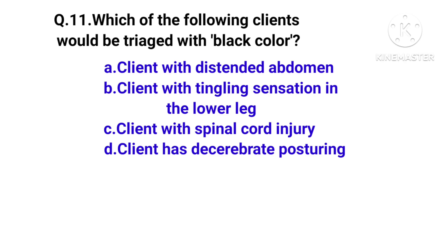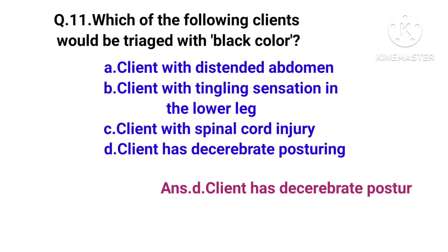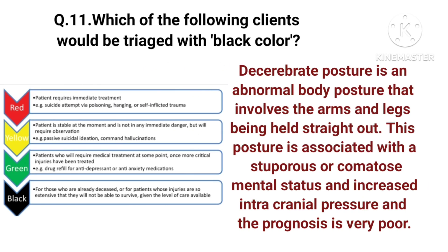Which of the following clients would be tagged with black color? Options: client with distended abdomen, client with tingling sensation in the lower leg, client with spinal cord injury, or client with decerebrate posturing. The right answer is option D — client with decerebrate posturing. Decerebrate posture is an abnormal body posture involving arms and legs held straight out, associated with a stuporous or comatose status, increased intracranial pressure, and a very poor prognosis.